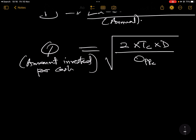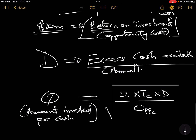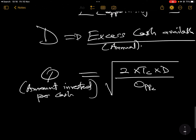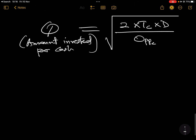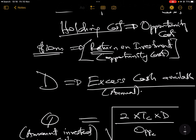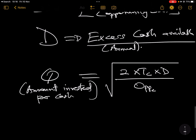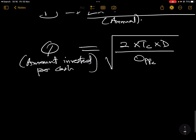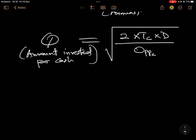Most times the Baumol calculation is not always tested — it's very rare — but you need to understand the interpretation. It's an EOQ model and a replica of the inventory model. The third and last approach for managing cash is the use of cash budgeting.